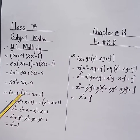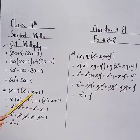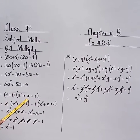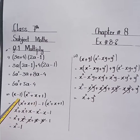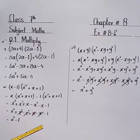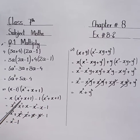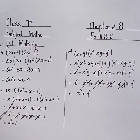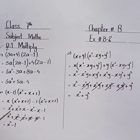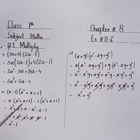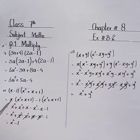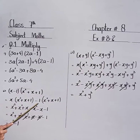The second part is (x - 1) into (x squared + x + 1). First we multiply x by (x squared + x + 1). x multiplied by x squared is x cubed, plus x multiplied by x is x squared, plus x multiplied by 1 is x.